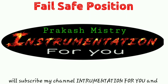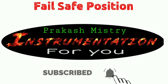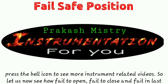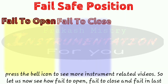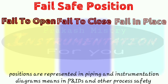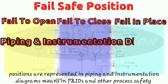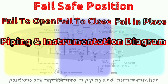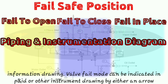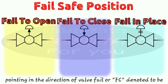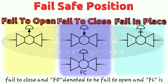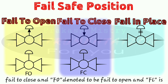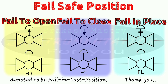Now let us see how fail to open, fail to close, and fail in last position are represented in piping and instrumentation diagrams. In P&ID and other process safety information drawings, the valve fail mode can be indicated by either an arrow pointed in the direction of the valve fail, or by the abbreviations: FC for fail to close, FO for fail to open, and FL for fail in last position.